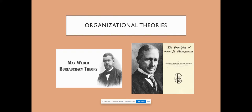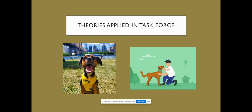In applying these theories to the task force, I would focus more on Weber's theory of bureaucracy as opposed to Taylor's scientific management. Weber's theory of bureaucracy will give the task force a hierarchy, which will be needed when multiple agencies are working together to achieve a common goal. Taylor's theory of scientific management can be used for the process and to establish efficiency within the process of the task force, while Weber's theory of bureaucracy will be used to establish a clear hierarchy.